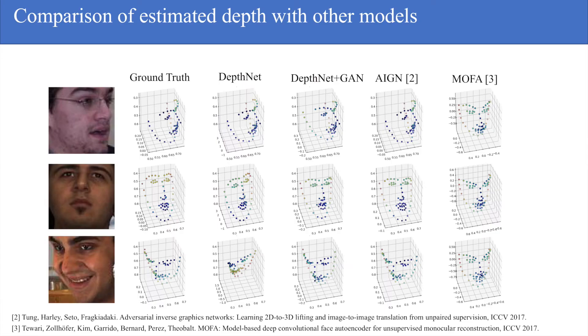Here is a comparison of estimated depth with other models. As you can see, we have some faces, the ground truth depths, the depths inferred by DepthNet. In this one, we have added depth supervision in the form of a generative adversarial network. AIGN and MOFA are other methods in the literature that we compare to.